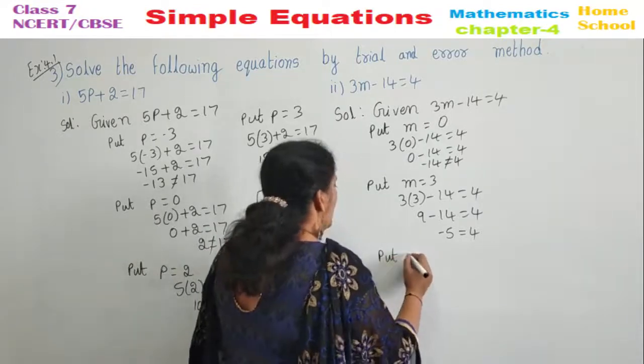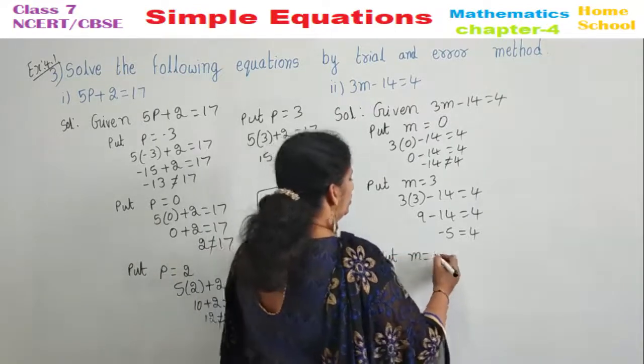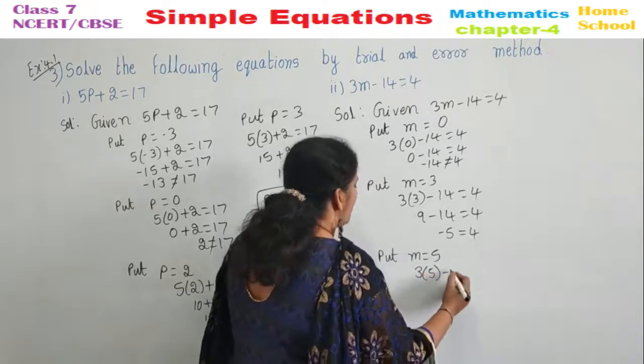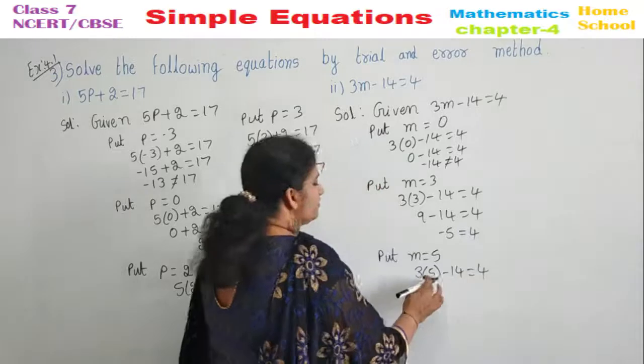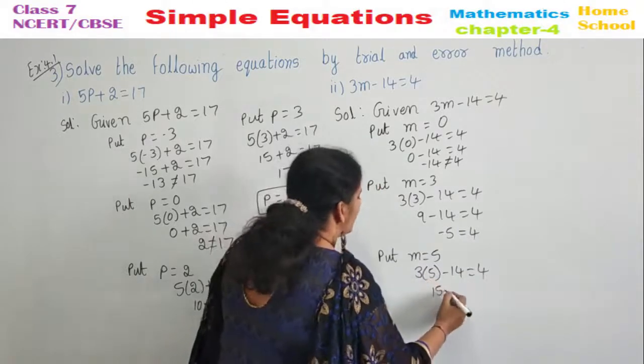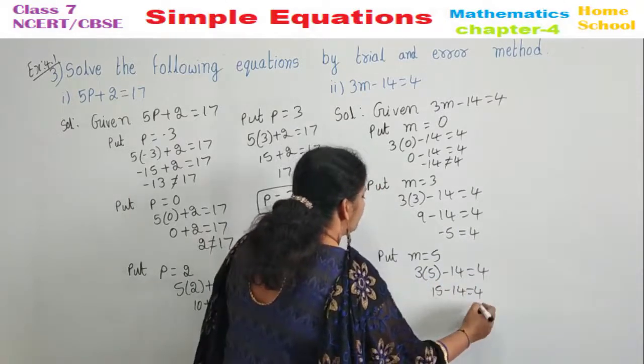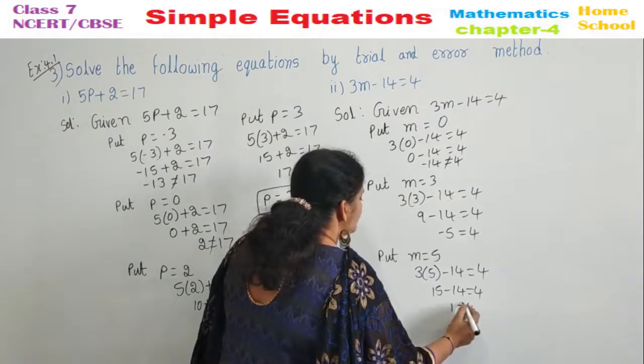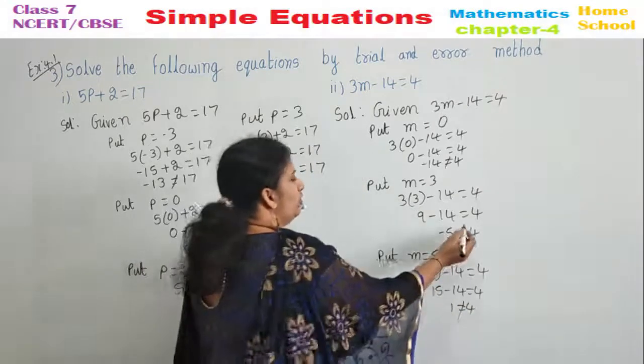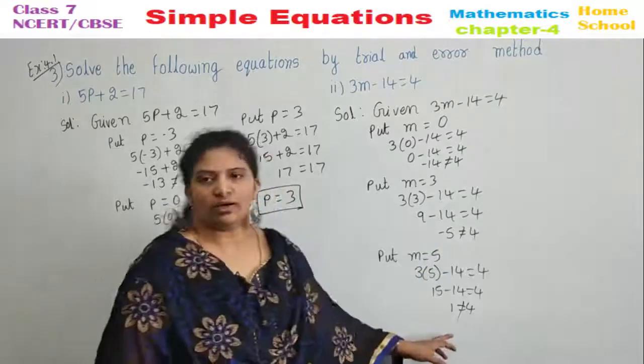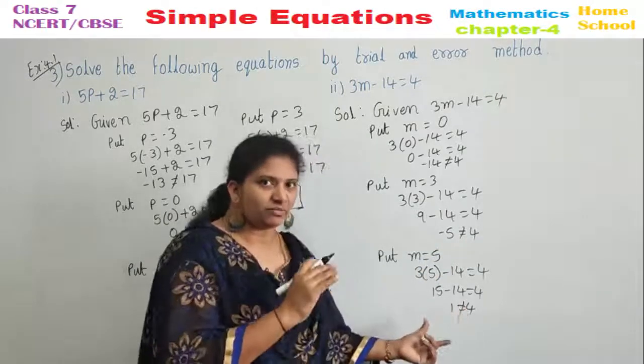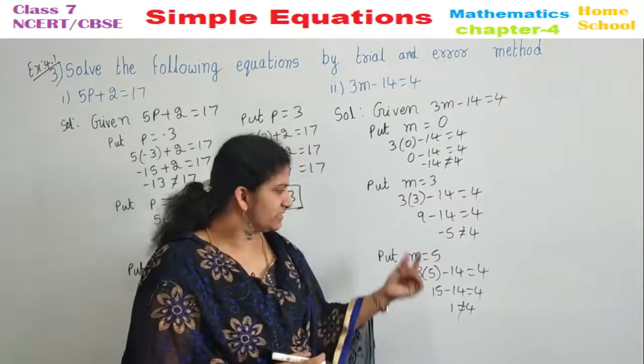Put M is equal to 5. 3 into 5 minus 14 equal to 4. 5, 3 is 15 minus 14 equal to 4. 15 minus 14 will be 1. 1 is not equal to 4. But we are very nearer. It might be the next number is your answer.